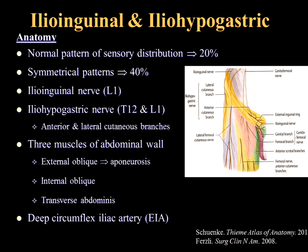There are three muscles we care about under ultrasound guidance: the external oblique, internal oblique, and transverse abdominus. One artery to be concerned about is the deep circumflex iliac artery, which comes off the external iliac artery. You can see the lateral cutaneous branch coming off the iliohypogastric nerve, and also the anterior cutaneous branch.